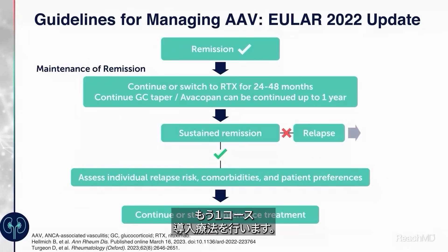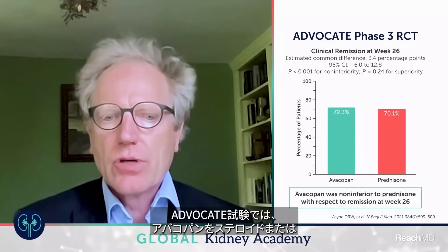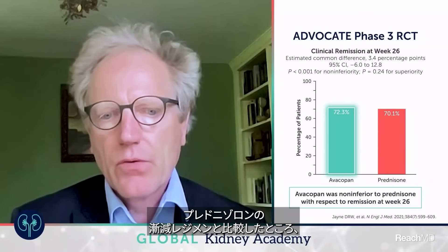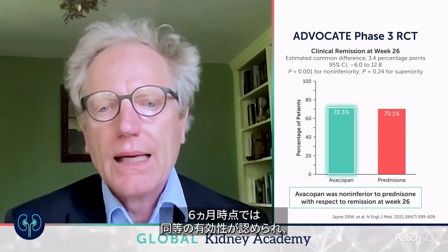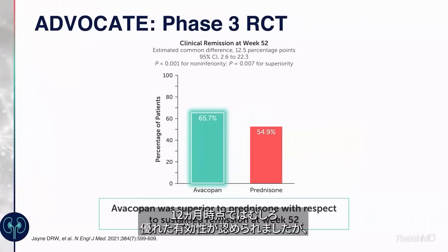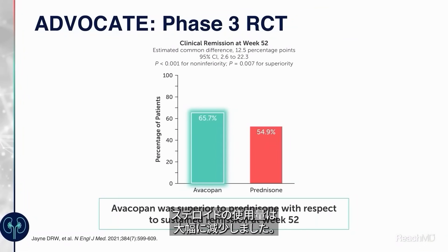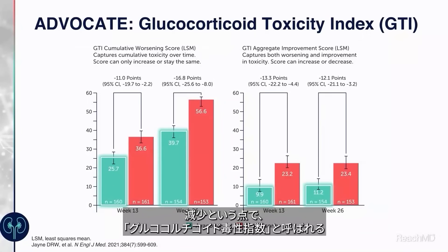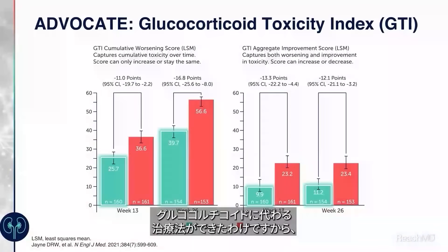If the patient is relapsing, they receive another course of induction treatment. David, based on recent clinical trials, what opportunities do we have to optimize treatment for our patients to achieve better outcomes? The ADVOCATE trial demonstrated that when Avacopan was compared to a prednisolone tapering regimen, there was equal efficacy at 6 months, and in fact superior efficacy at 12 months, but with much reduced steroid use. The benefit to patients was demonstrated in terms of the reduction of steroid-associated adverse events, as assessed by a standardized tool called the glucocorticoid toxicity index.